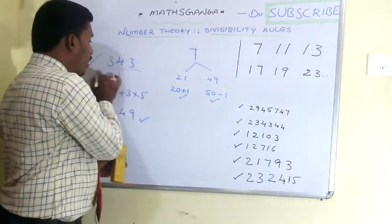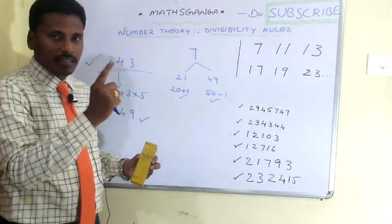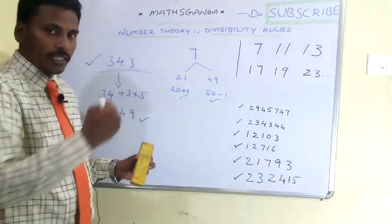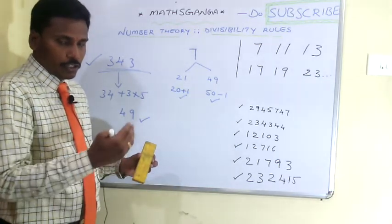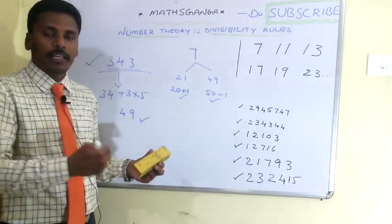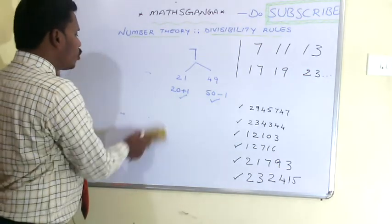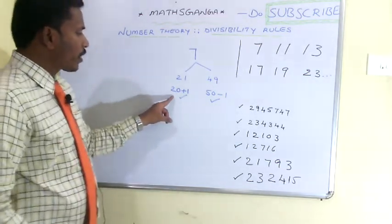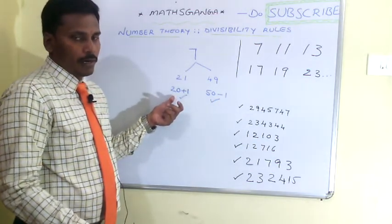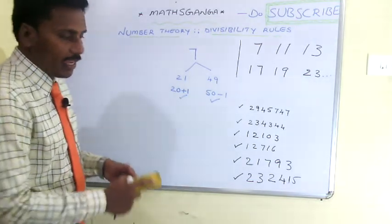To check whether a given number is a 7 multiple, we can proceed in two ways. One way is multiplying the unit's digit with 2 and subtracting from the remaining number, continuing until we reach a known 7 multiple. The other rule is multiplying the unit's digit with 5 and adding to the remaining number, continuing the procedure. Since 2 is smaller than 5, for 7 we move with the first rule.